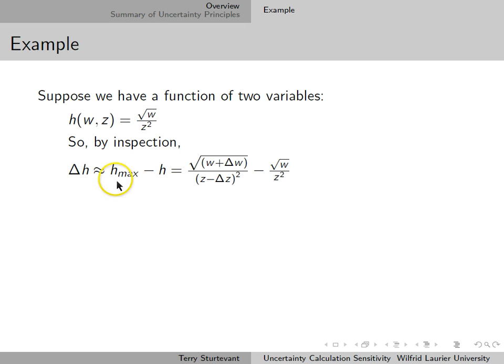the uncertainty in h is h max minus h, which is the square root of w plus delta w over z minus delta z all squared, minus the square root of w over z squared.